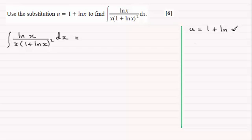What we would want to do next is to differentiate this with respect to x. So therefore we'd have du/dx would equal, differential of one is 0, but the differential of natural log of x is going to be 1 over x.